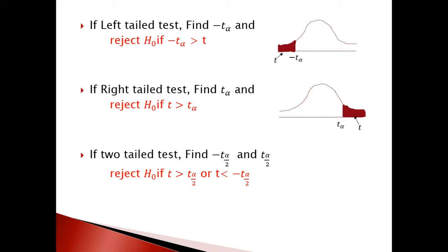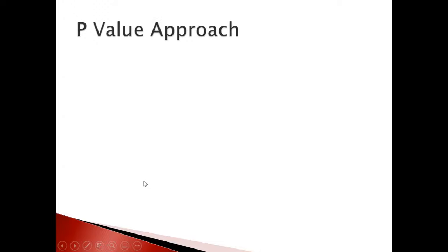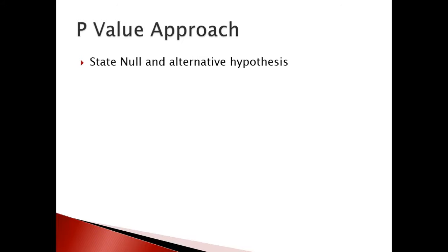For a two-tail test, reject H₀ if t is less than negative t-alpha/2 or greater than t-alpha/2.